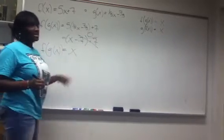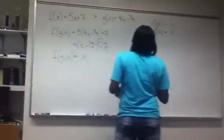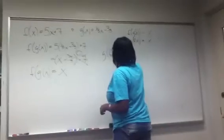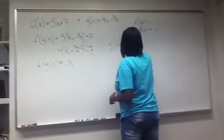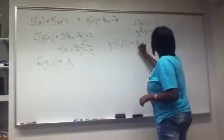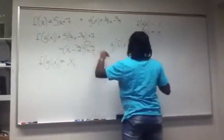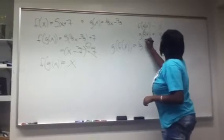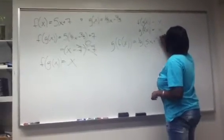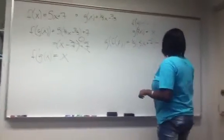But we still have to try it the other way. So here we have g of f of x equals the 1/5 times this equation, which we'll put in for x. So times the quantity of 5x plus 7. And then we still subtract 7/5.